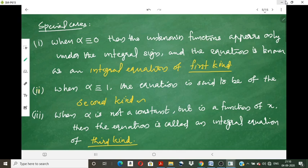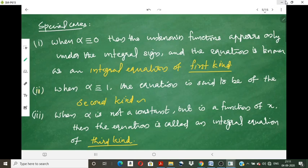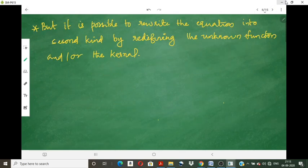We have discussed linear integral equations with two main classifications — Fredholm and Volterra. The key difference is that in the Volterra type, the upper limit of the integral is the current variable, not a constant. There are three special cases: first kind (alpha = 0), second kind (alpha = 1), and third kind (alpha is a function of x). Notably, the third kind can be converted into the second kind by redefining the unknown function or the kernel or both.